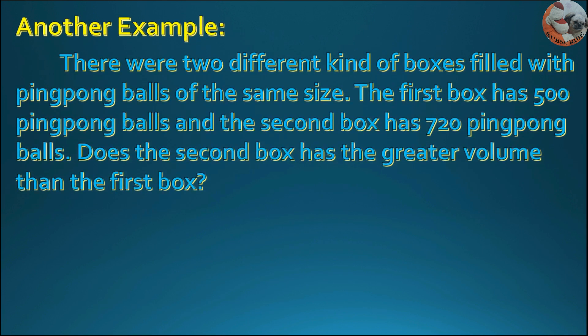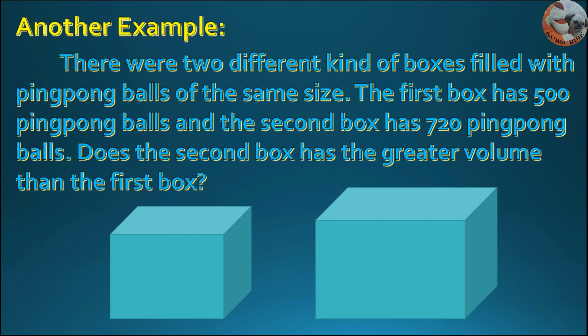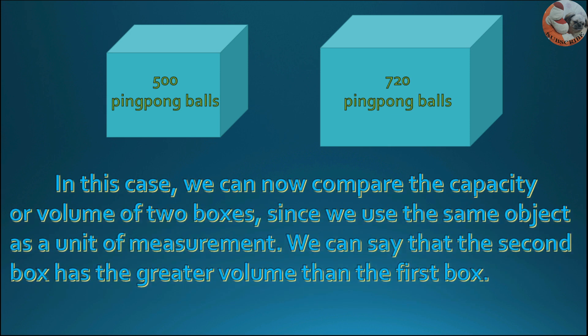Another example: there were two different kinds of boxes filled with ping pong balls of the same size. The first box has 500 ping pong balls, and the second box has 720 ping pong balls. Does the second box have the greater volume than the first box? In this case, we can now compare the capacity or volume of two boxes, since we use the same object as a unit of measurement. We can say that the second box has the greater volume than the first box.